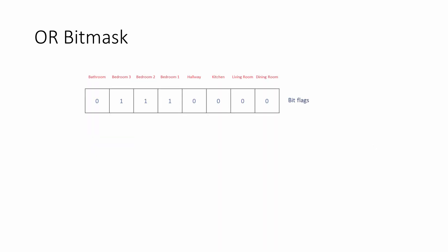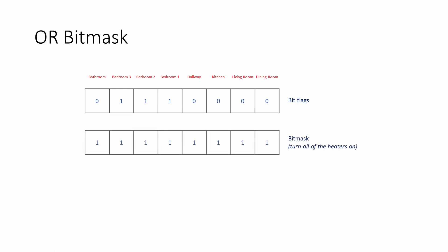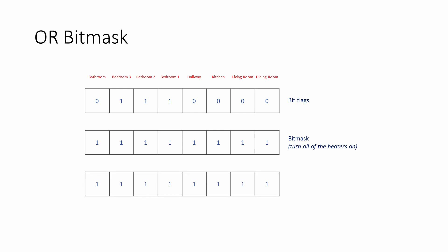In this example, we want to turn all of the heaters on at once. A bitmask containing a full set of ones can be applied with the OR operation to achieve this. The result is a full set of ones, which can be written directly into the bit flags register. You can probably imagine all kinds of control systems with multiple devices attached, and it's possible that every device needs to be checked or restarted on occasion. This is where the OR operation has a part to play.